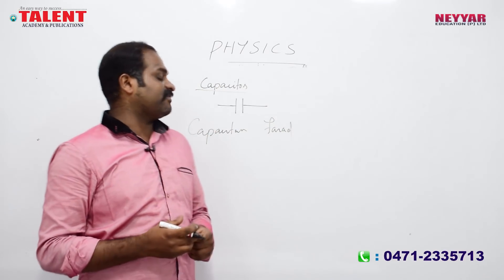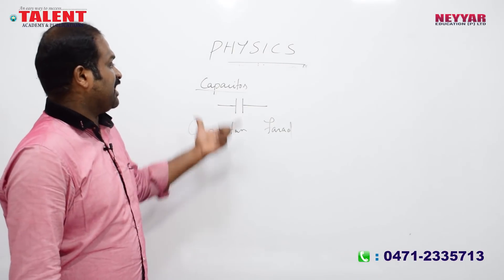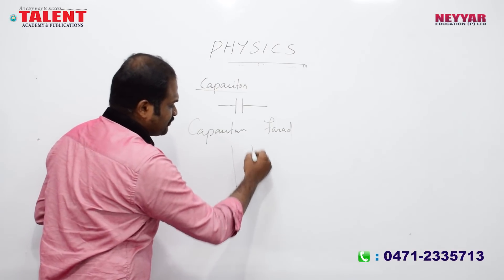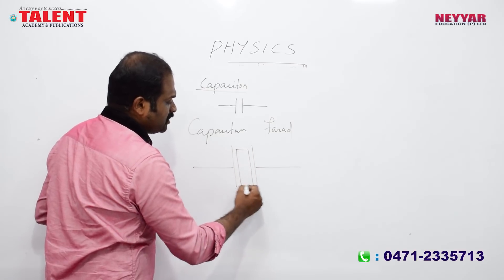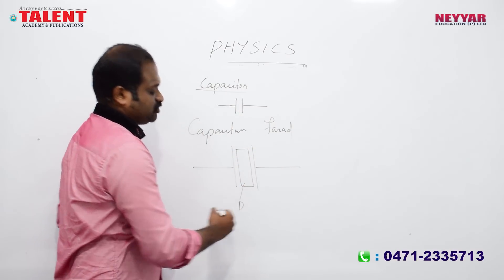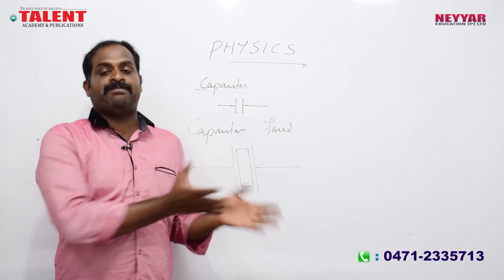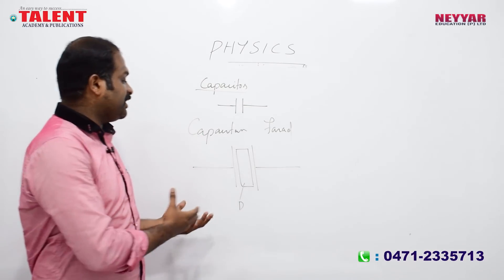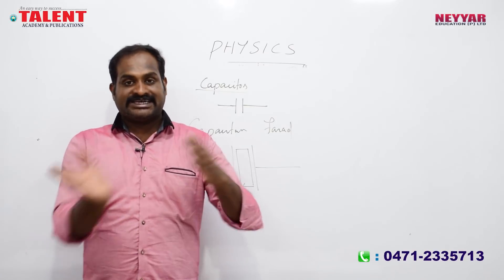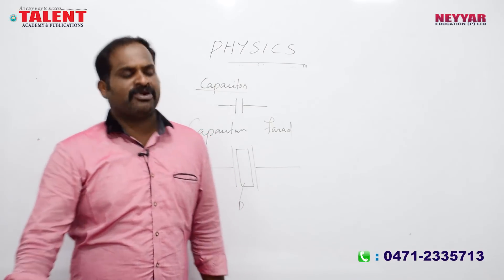The units of capacitance are farad, microfarad, and picofarad. Farad is the unit indicating the capacity to store electrical charge. The capacitor is a storing device. It is a parallel plate device. Electrolytic capacitors use an electrolyte.